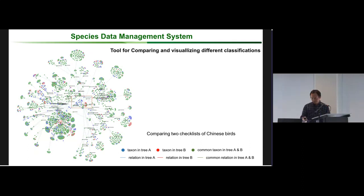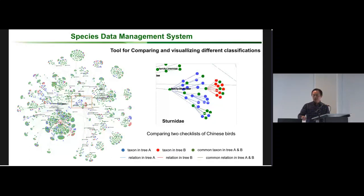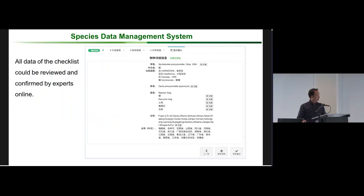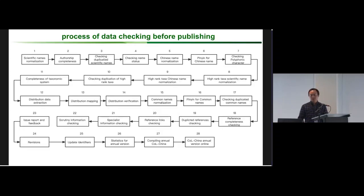We also compare taxonomic trees to find differences and see how to integrate different sources together. There is another tool to compare taxonomic groups from COL and COL China. Most of the nodes and taxonomic groups are common. All the data are confirmed by experts online in the species data management system. This is the process of data checking before publishing the annual Catalogue of Life China, including 28 steps.